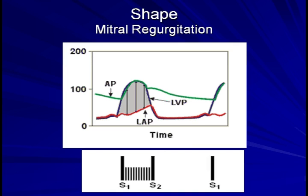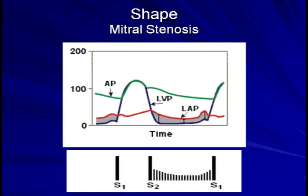And here is mitral stenosis. Here there is a relatively constant pressure gradient between the left atrium and left ventricle, with the exception of a pre-diastolic accentuation, which is the consequence of the atrial kick.